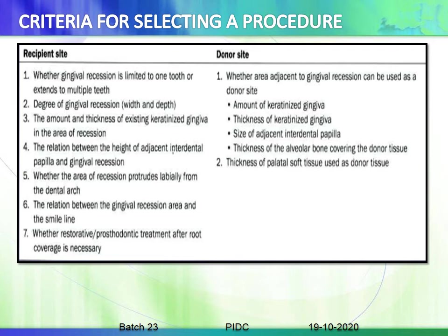Further criteria include: the relation between the gingival recession area and the smile line, and whether restorative or prosthodontic treatment after root coverage is necessary. For donor site selection: whether the area adjacent to the recession can be used as a donor site, the amount and thickness of keratinized gingiva, the thickness of the alveolar bone covering the donor tissue, and the thickness of the palatal soft tissue used as donor tissue, which should be around 1 to 1.5 mm.